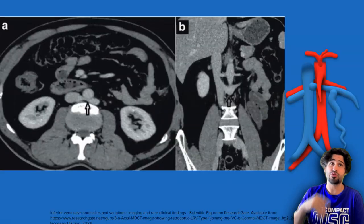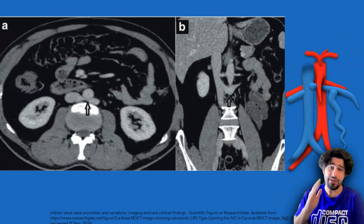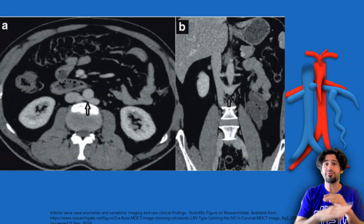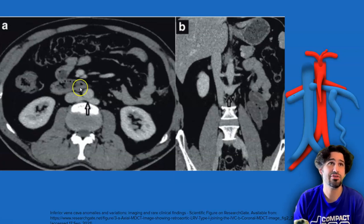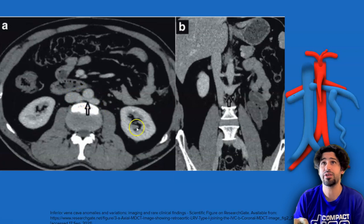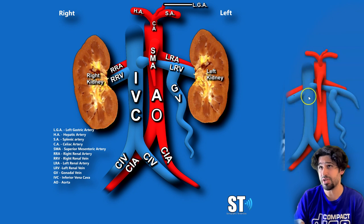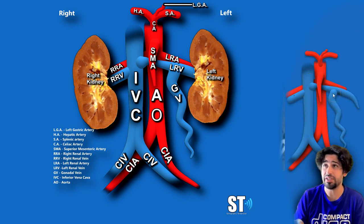There are two types. There's the retrocaval type — in some people their left renal vein goes posterior to the IVC and that can cause compression. As you can see here: aorta, vertebrae, IVC, and that's the left renal vein going posterior to the aorta. Here it is again in coronal — you can see the two renal arteries. This would be the normal type: IVC here, left renal vein going in between the SMA, and this would be the gonadal or testicular vein, which in cases of compression causes varicosity.